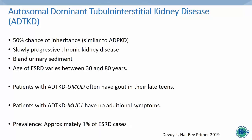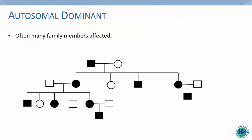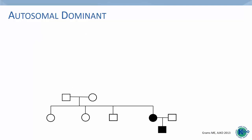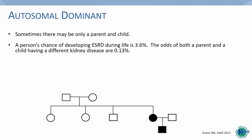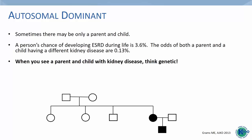The age of end-stage renal disease varies tremendously between 30 and 80 years even within families. The prevalence of these conditions is about one percent of the entire end-stage renal disease population, and I think all of us have one family that has ADTKD in our patient population. As the disease is autosomal dominant, there are often many family members affected, similar to ADPKD. A person's chance of developing end-stage renal disease during their life is about 3.6 percent, so the odds of both a parent and a child having a different kidney disease are about one in a thousand — when we see a parent and a child with kidney disease, we should think genetic.